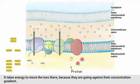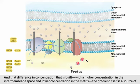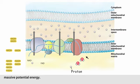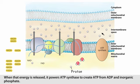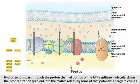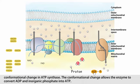It takes energy to move the ions there, because they are going against their concentration gradient. That difference in concentration that is built — with a higher concentration in the intermembrane space and a lower concentration in the matrix — means the gradient itself is a source of massive potential energy. When that energy is released, it powers ATP synthase to create ATP from ADP and inorganic phosphate. Hydrogen ions pass through the proton channel portion of the ATP synthase molecule, down their concentration gradient into the matrix, releasing some of that potential energy to cause a conformational change in ATP synthase. The conformational change allows the enzyme to convert ADP and inorganic phosphate into ATP.